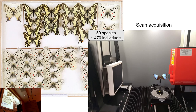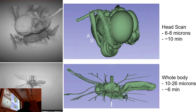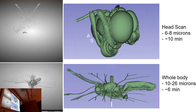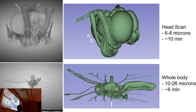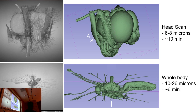We have 59 species and around 470 individuals. I do no post-processing of the tissue whatsoever — these are basically dried specimens that we put directly on the scanner and get the scans. The problem is with the mounting needle, which creates a lot of noise when you actually want to get the data out. With museum specimens, you can't avoid it or you would destroy the specimen. For each individual, we got a high-resolution head scan at around 6 to 8 microns, and we also have whole body scans. Whenever possible, we tried to get 4 males and 4 females per species so we can look at sexual dimorphism.